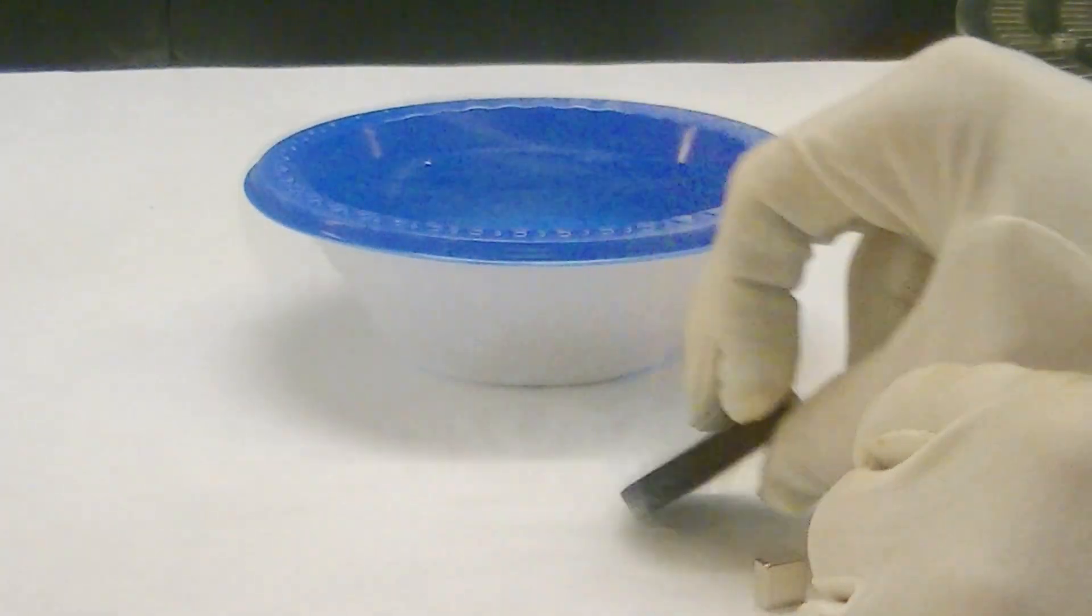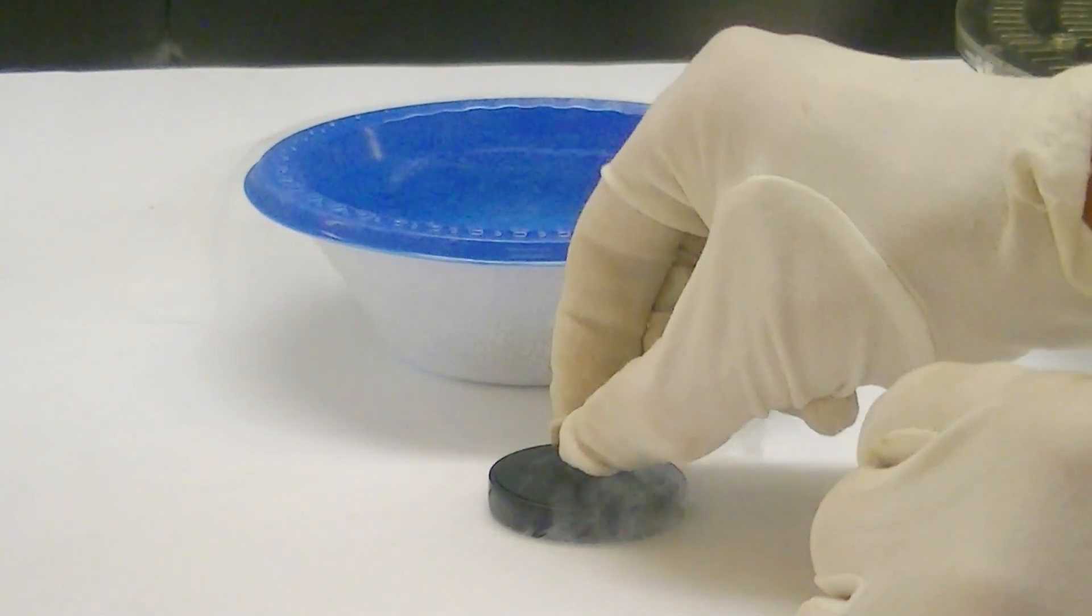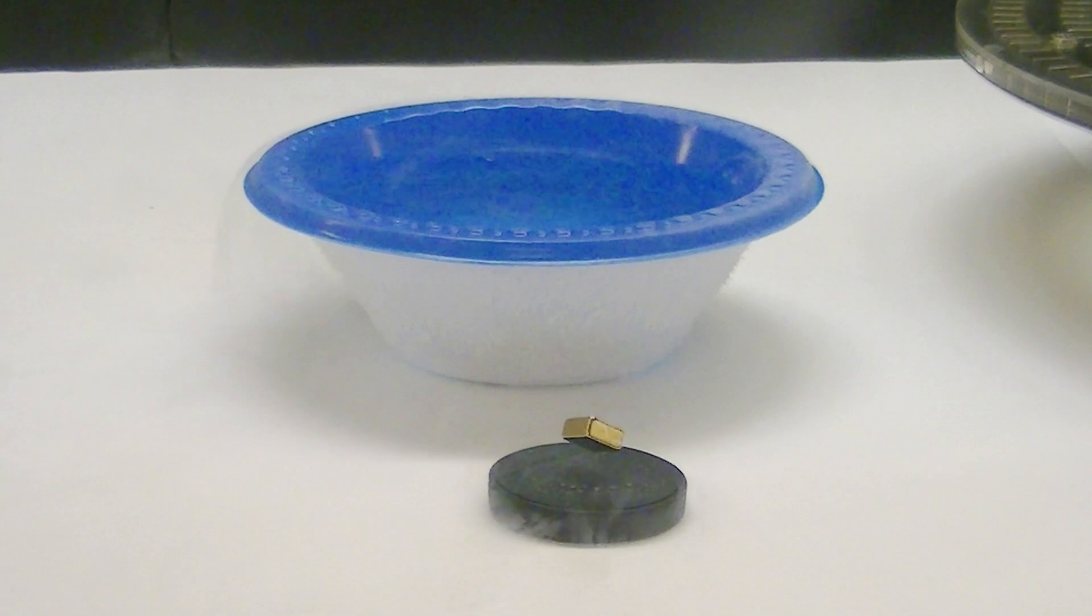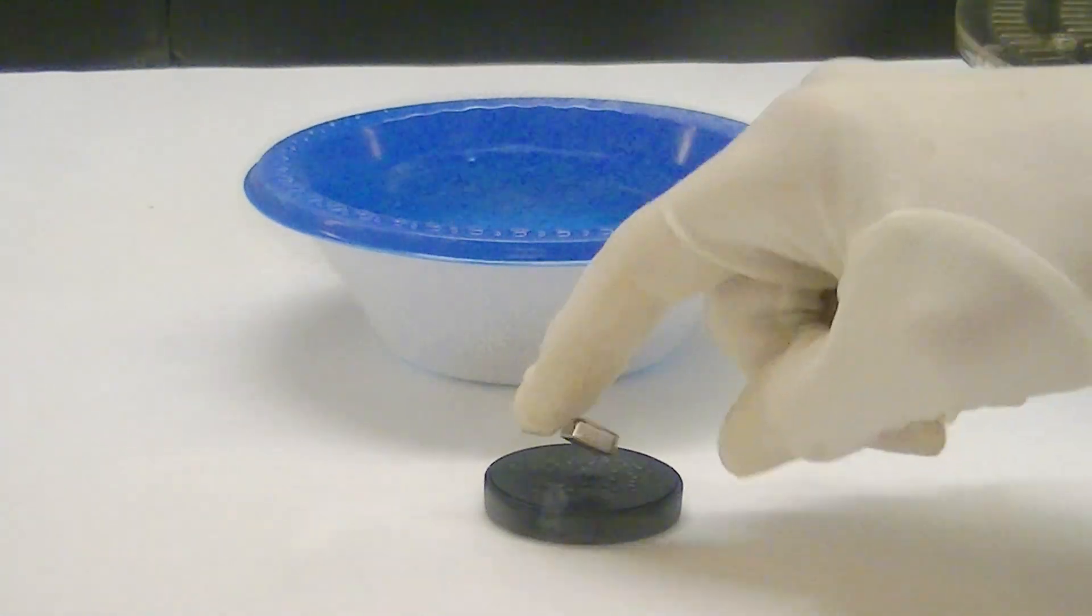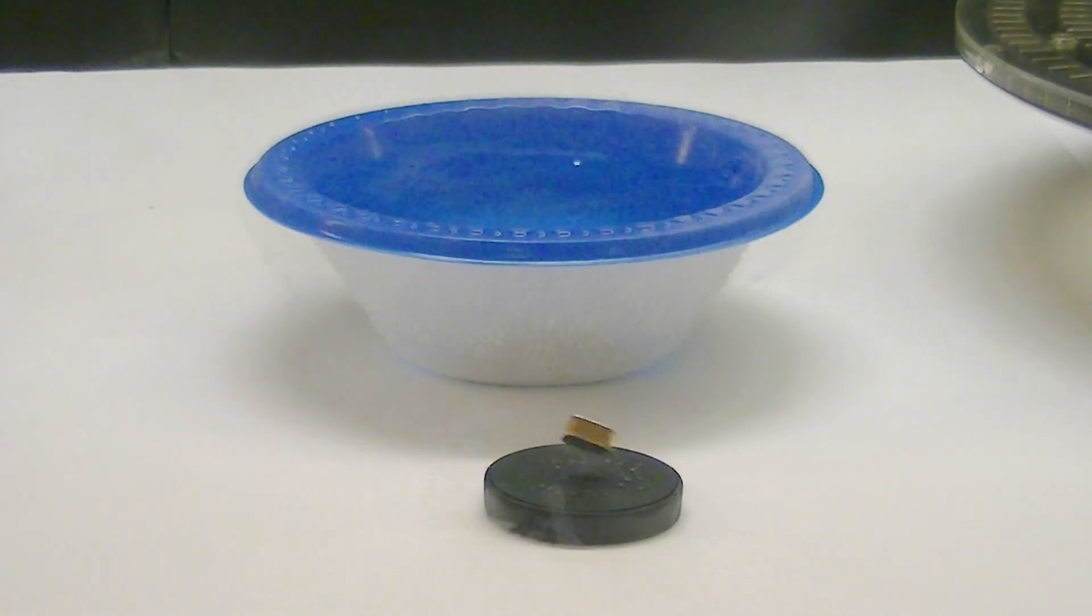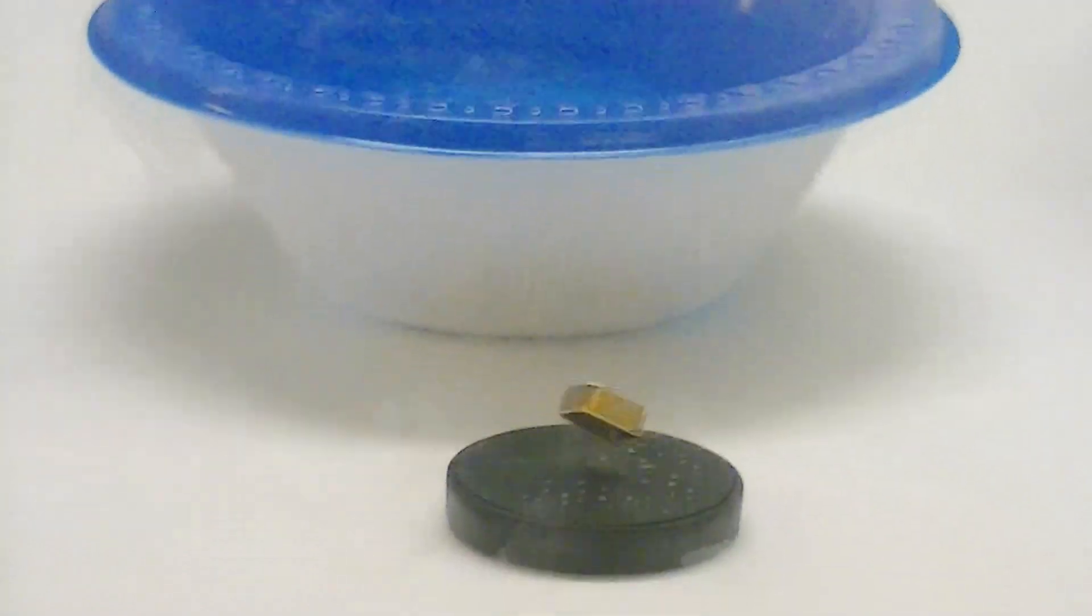Now that we've cooled this superconductor in some liquid nitrogen, we should be able to get a magnet to hover above it. That's pretty neat, isn't it? It's wild how the magnet isn't just locked in place, but can be made to rotate above the superconductor. Let's zoom in for a closer look.